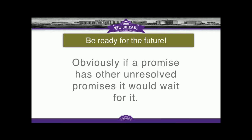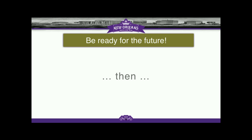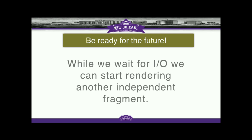Obviously if you have a promise going down a tree and something else is in the tree, this works recursively. If two things depend on each other, one promise needs to wait on the other. But there are real big possibilities — with HHVM for example you could make an async queue runner instead, and like magic we have asynchronous I/O almost automatically. While we're waiting for I/O, we can start rendering another independent fragment. Maybe that's all cached and never needs the database, or it's just internal things. This can really help reduce our I/O bottleneck, because with PHP 7, things have gotten so much faster that I/O is starting to become a bottleneck again.